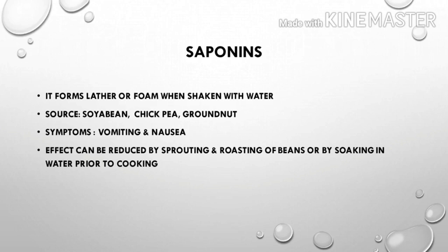Next is saponin. The name comes from the fact that it produces foam like soap when shaken with water. The effects of saponins can be reduced by sprouting and roasting of beans, and also by soaking in water prior to cooking.